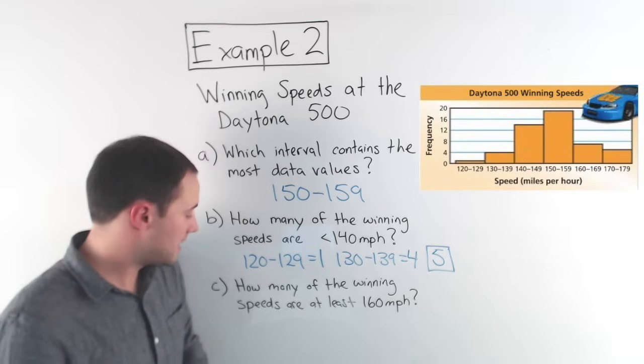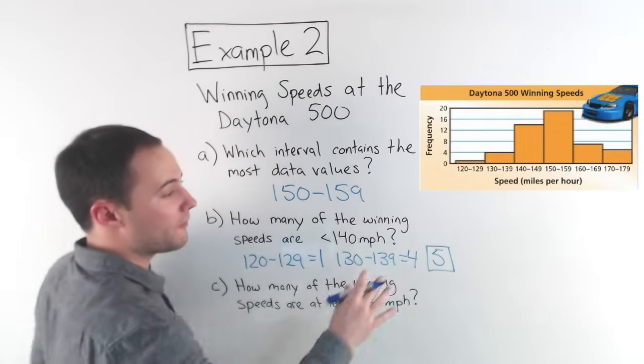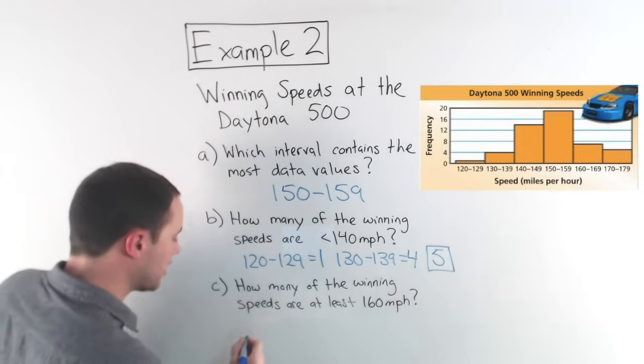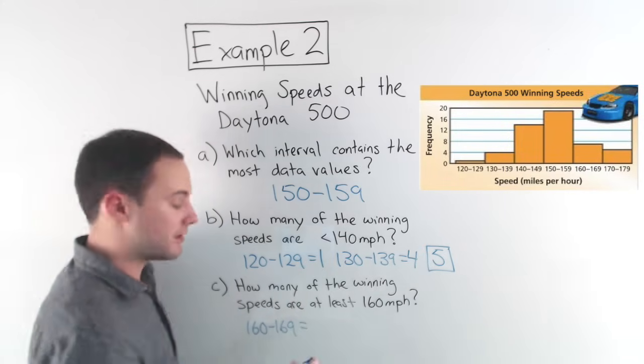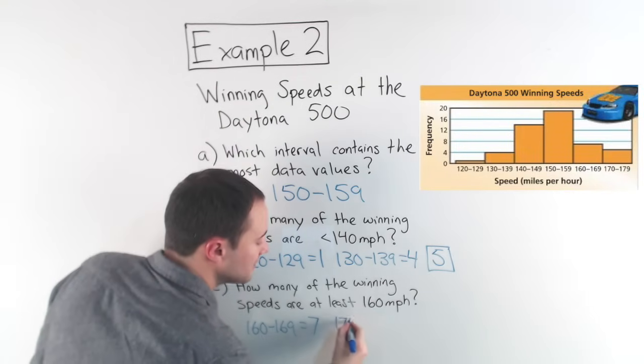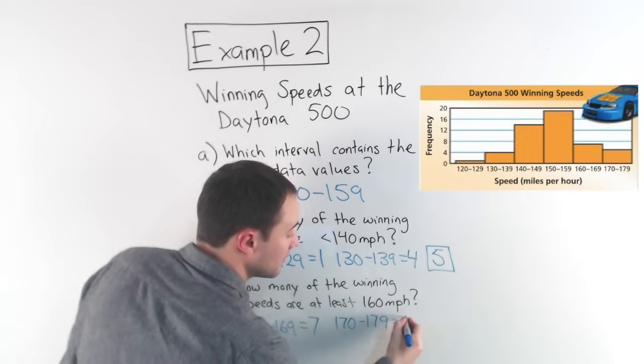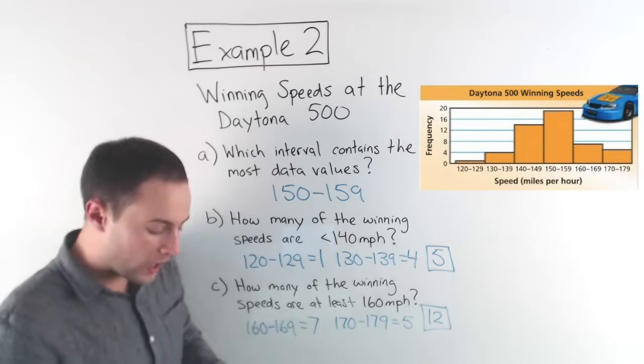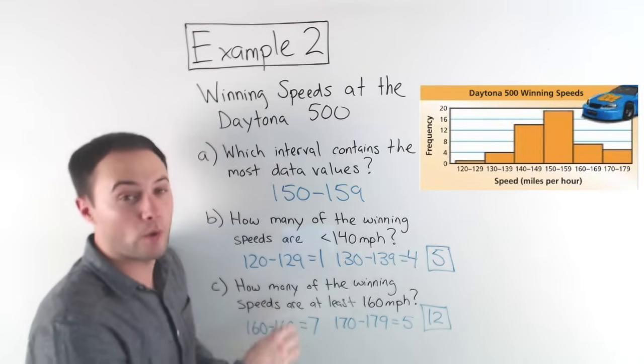And finally, part C, how many of the winning speeds are at least 160 miles per hour? So let's look. Well, at least means 160 or greater, right? So at 160 to 169, that interval, there were seven speeds in that interval, seven winning speeds in that interval. And then from 170 to 179 miles per hour, there were five. So we add those up, seven and five would give us 12. So there were 12 total speeds that were at least 160 miles per hour that won the Daytona 500.